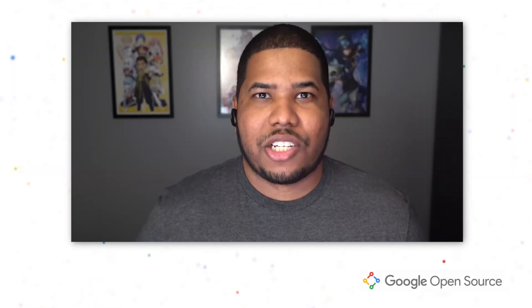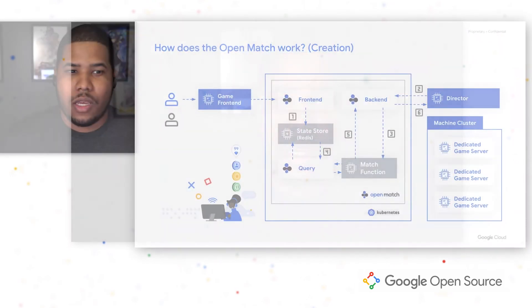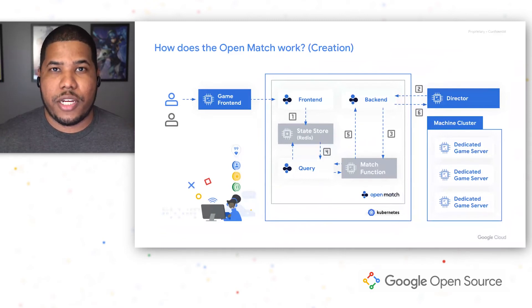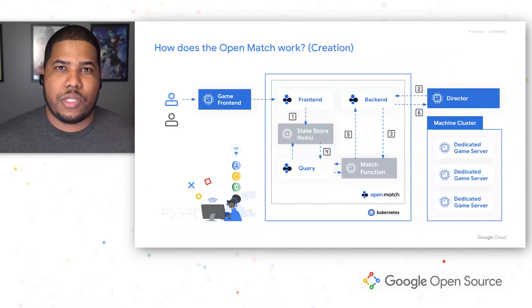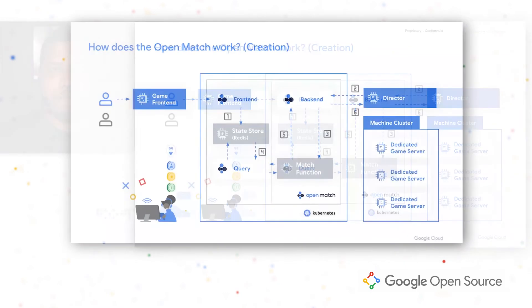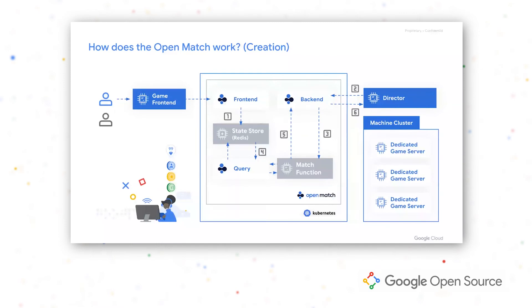Now that we saw OpenMatch in action, let's talk about the matchmaking flow. Your players submit a request to matchmake through your custom Game Front End service. The Game Front End is your responsibility as a developer — it authenticates your player and builds a matchmaking ticket from all the player information necessary. Once your Game Front End has built a ticket, it forwards it to OpenMatch, where it is stored inside a state store. We currently use Redis for that, but we allow the flexibility to swap it out with any other key-value store.